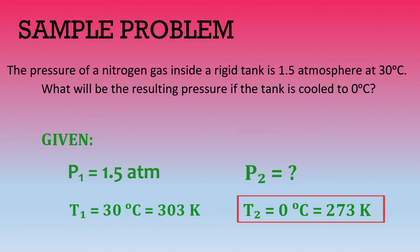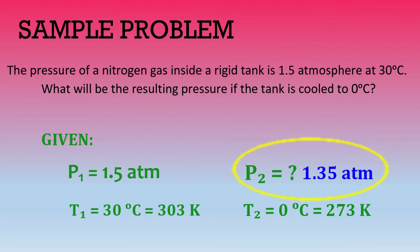As the temperature is decreased from the original temperature, which is 303 Kelvin, to the final temperature, which is 273 Kelvin, its pressure also decreased from P1, which is 1.5 atm, to P2, which is 1.35 atm.